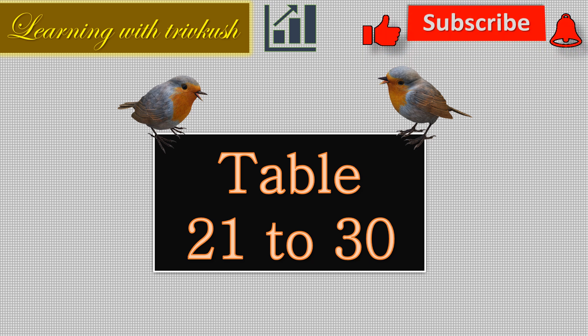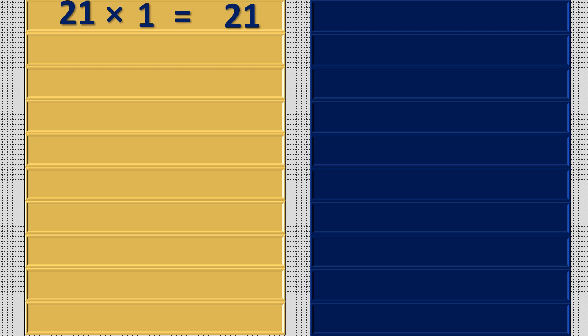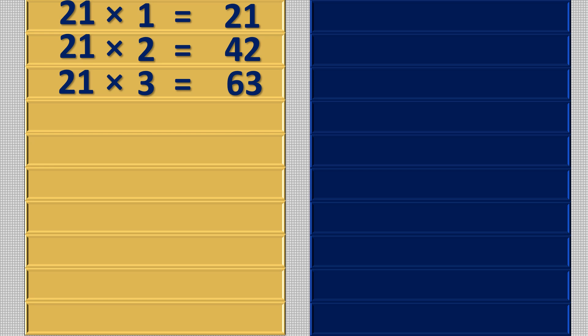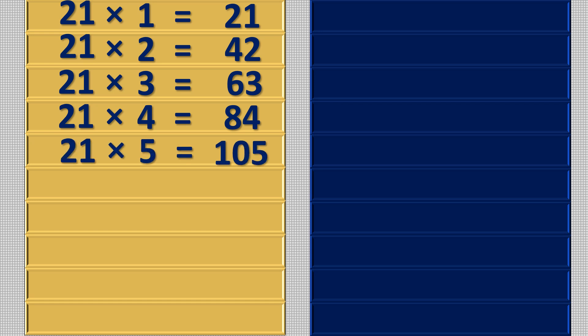If you are new to my channel please subscribe it for more videos. Let's start: 21 1s are 21, 21 2s are 42, 21 3s are 63, 21 4s are 84, 21 5s are 105.